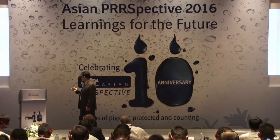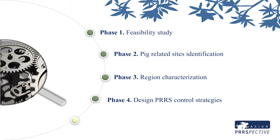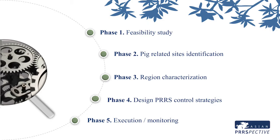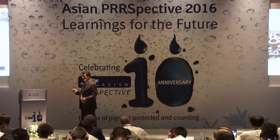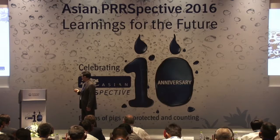These guidelines are made up of five different phases. The first phase is what we call the feasibility study. The second phase is the identification of PERS-related sites in that region. The third phase is region characterization. The fourth phase, using all information collected, involves designing the strategies of PERS control for the region. And finally, the fifth phase is the execution and monitoring of those strategies.